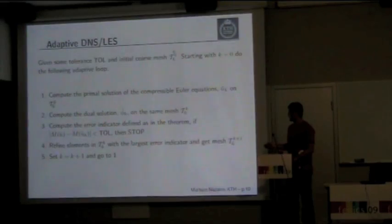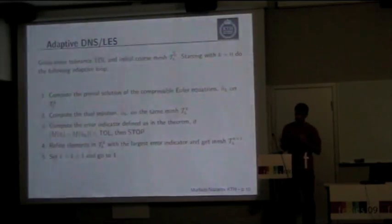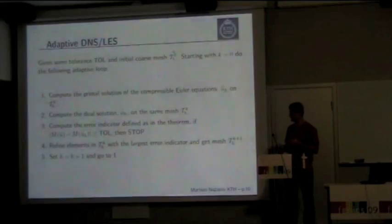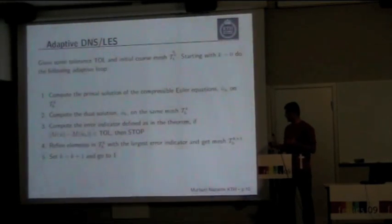These are the steps of the adaptive algorithm which Johan showed before. For a given mesh we calculate the forward problem and corresponding dual problem, then calculate error indicator. We check if it is less than tolerance; if so we stop, otherwise we refine the mesh and continue.